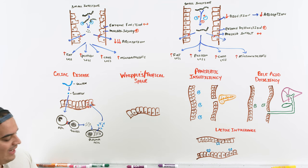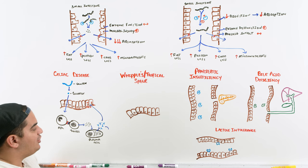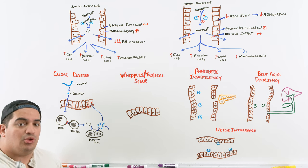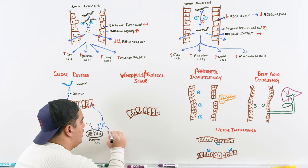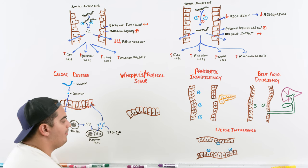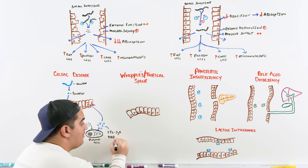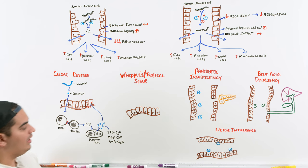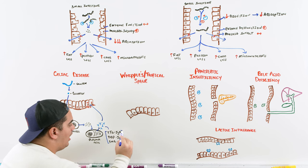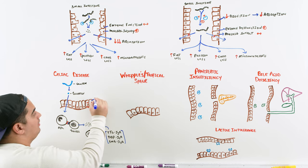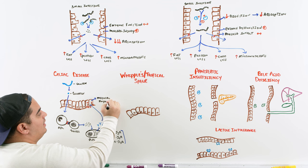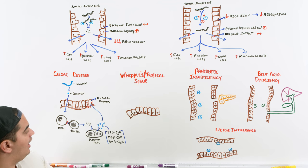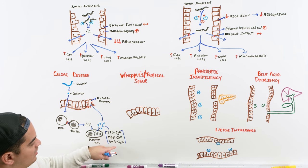The specific antibodies produced are diagnostically helpful. They're primarily IgA antibodies — as IgA is produced at mucosal surfaces like the GI tract. The key antibodies are: tissue transglutaminase antibody (IgA subtype), deaminated gliadin peptide (IgA subtype), and endomysial antibody (IgA subtype). These antibodies cause mucosal injury in the small intestine, leading to decreased absorption of particular nutrients.